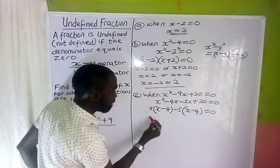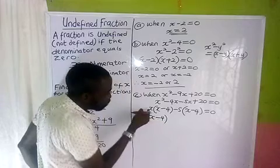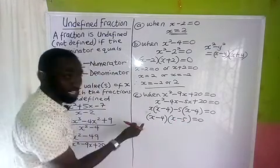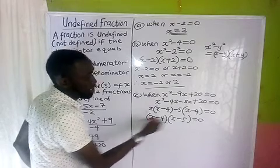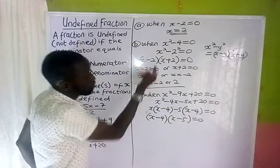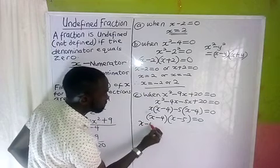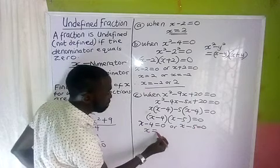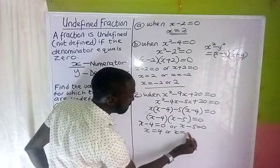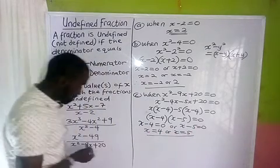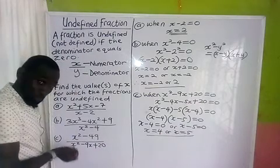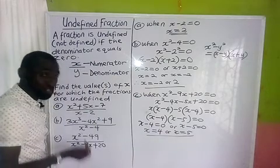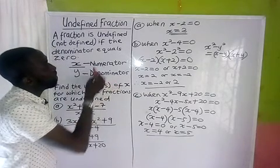I bring out (s minus 4) as a common factor, and the remainder is (s minus 5), giving (s minus 4)(s minus 5) equals zero. This means either s minus 4 equals zero or s minus 5 equals zero. So s equals 4 or s equals 5. If I put 4 or 5 into the denominator, everything gives zero, making the fraction undefined.